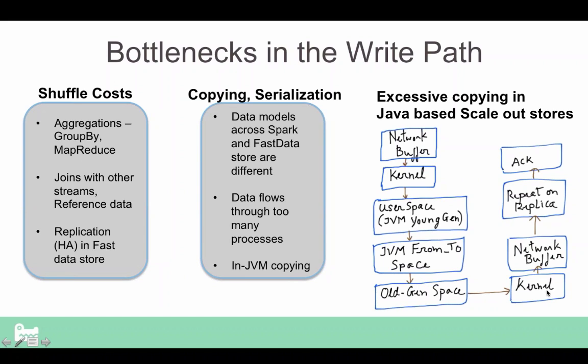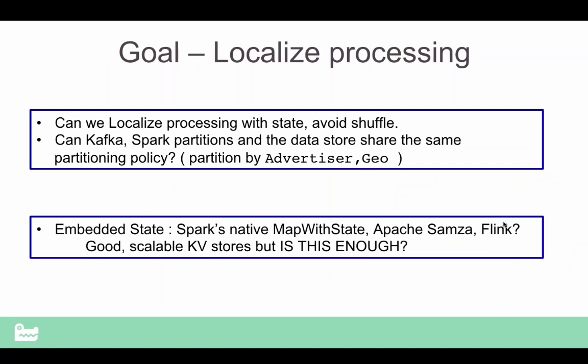After that, the JVM process needs to replicate this data to another node, so it holds a lock, makes a kernel copy, goes back into the network buffer, and literally repeats all those steps on the replica before it's actually processed. If you think about it, that's roughly 15 copies in a system considered pretty efficient. And if your backend storage is HDFS — which by default does three replicas — you're looking at maybe 20 copies of the same piece of data for a single write.